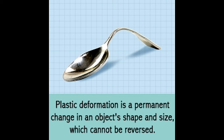However, if the stress applied on the solid exceeds its elastic limit, it produces a permanent change in its dimensions, which cannot be reversed even after the stress is removed. This is called plastic deformation. If stress is still applied even after irreversible deformation occurs, then the cross-sectional area reduces at a certain point called necking, and the solid breaks — called fracturing.